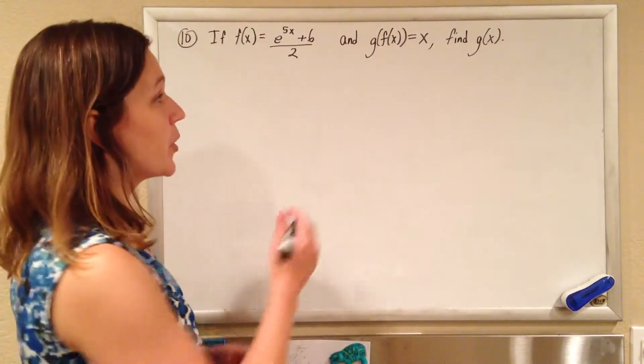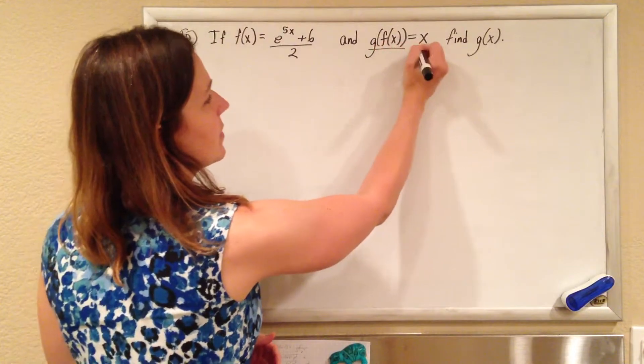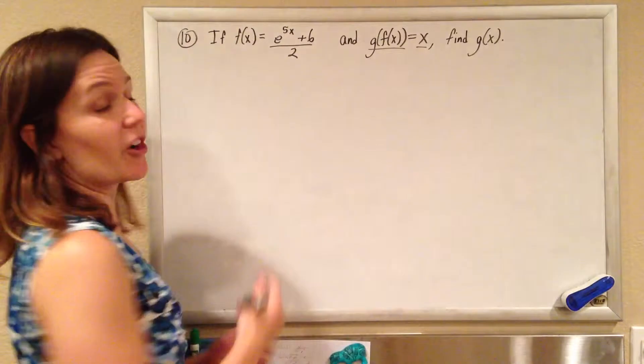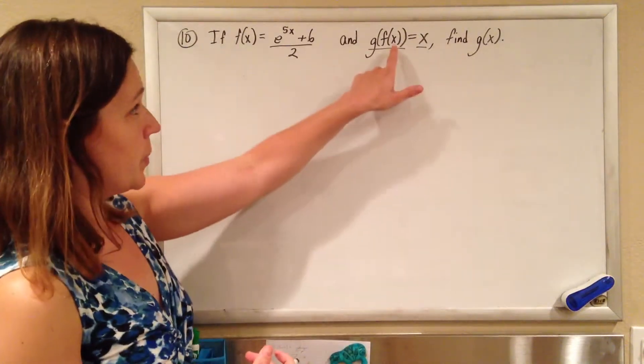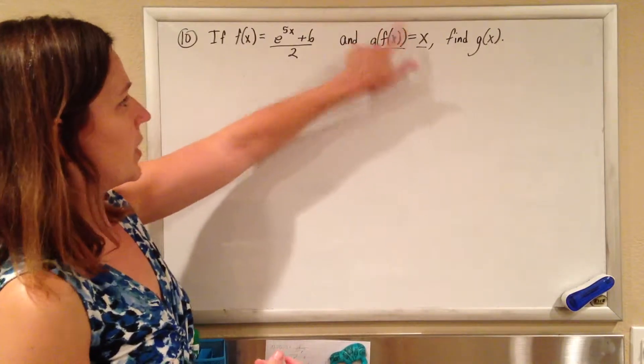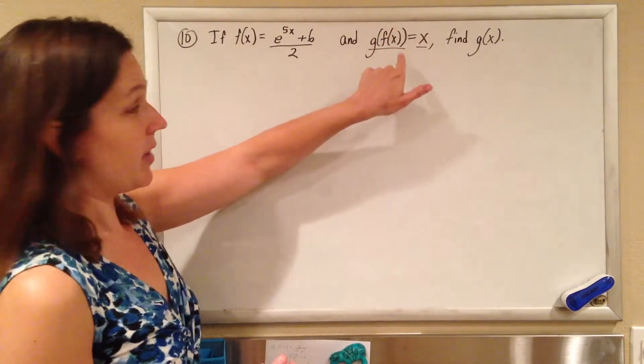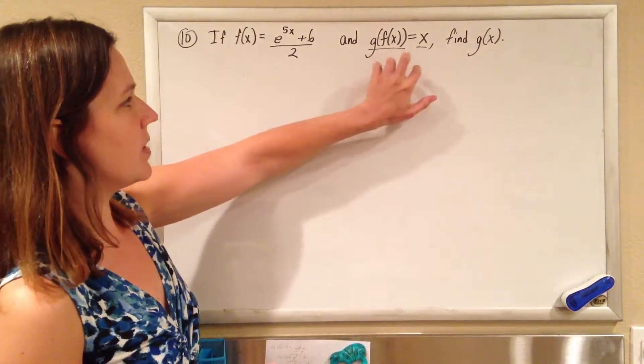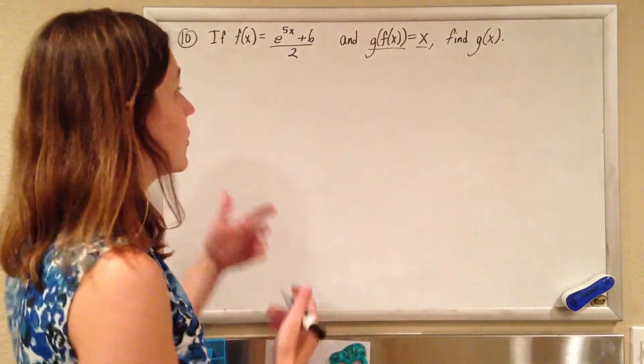So we cracked this one open when we realized that if g of f of x equals x, it's a fancy way of saying that f and g are inverses of each other. When you put x into f, and then you take that answer and put it into g, g undoes what f did and spits back out what you put in.